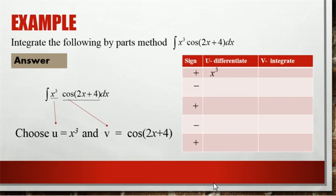In the second column you can take the u. The u we can differentiate now till we are getting zero. That means x cube differentiation is 3x square, 3x square differentiation is 6x, and 6x differentiation is 6.